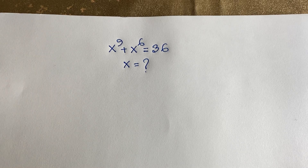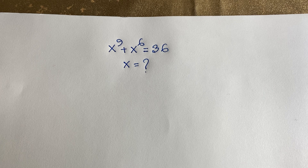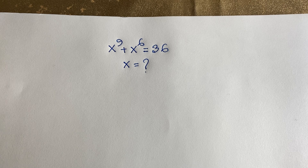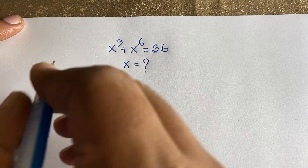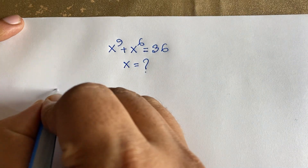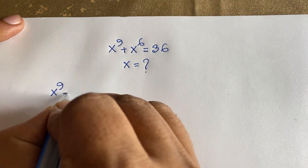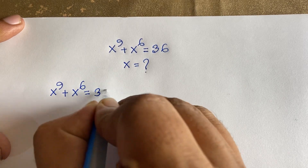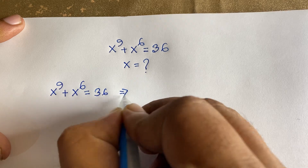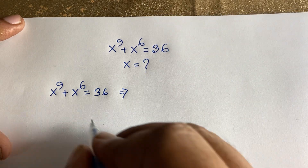Hello everyone. In this video we have solved this interesting Math Olympiad question. The question is: x to the power 9 plus x to the power 6 is equal to 36. What is x equal to? It is a wonderful Math Olympiad question, so let's start. Our equation is x to the power 9 plus x to the power 6 is equal to 36.